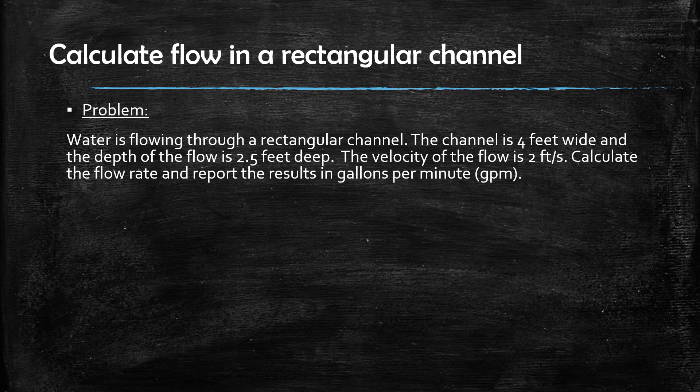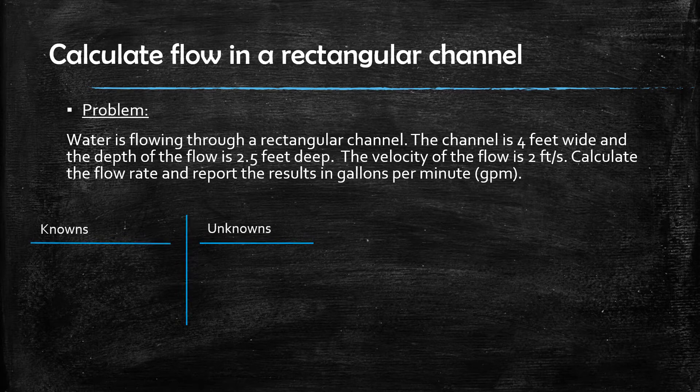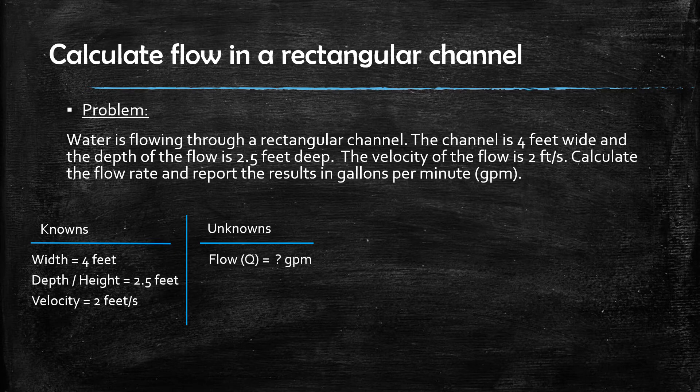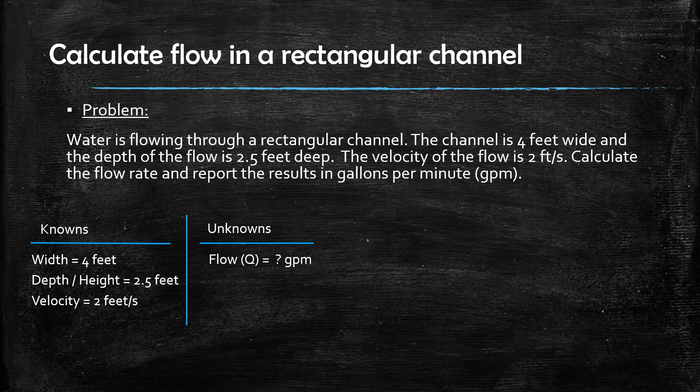The very first step we want to take in solving the problem is to list out all of the knowns and unknowns given in the problem statement. For this problem, we have been given that the width of the channel is four feet, the depth of the flow or height of flow is two and a half feet, and the velocity is two feet per second. The unknown is the flow rate.